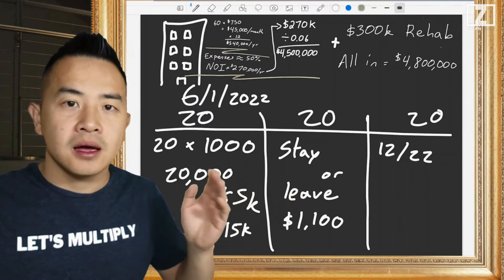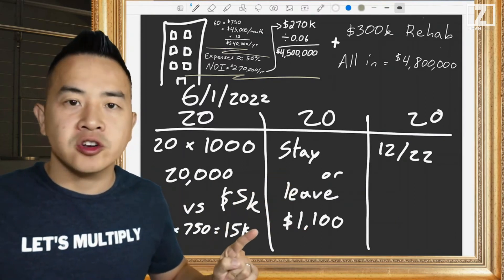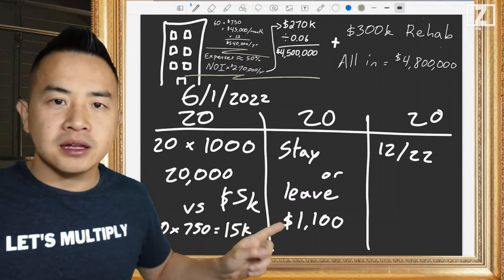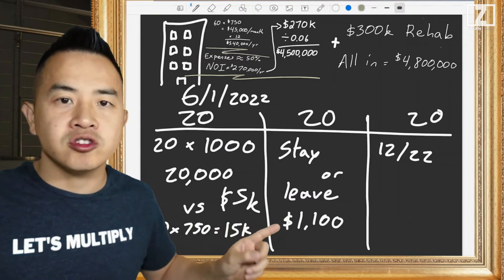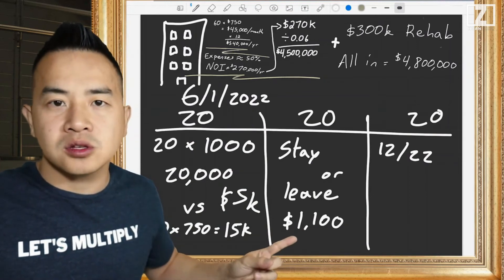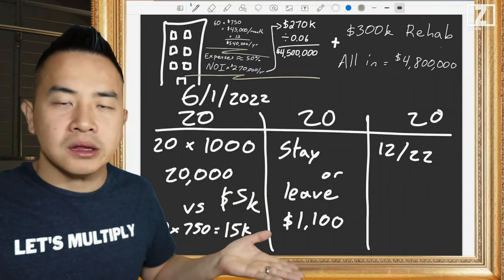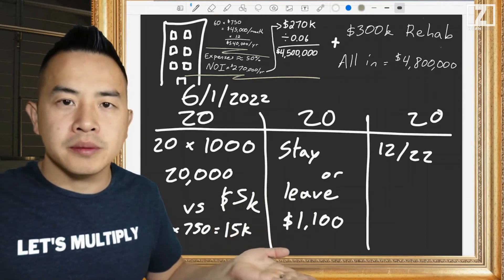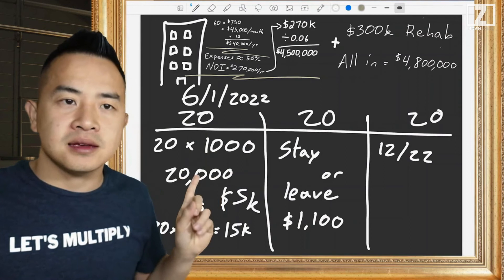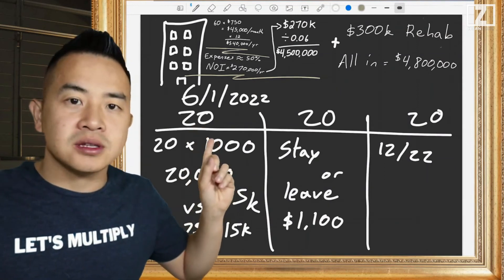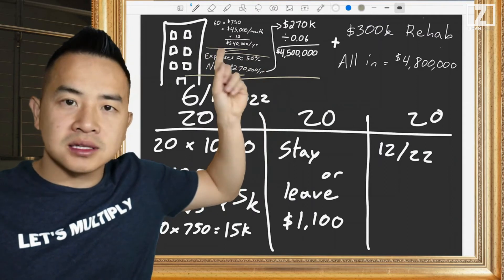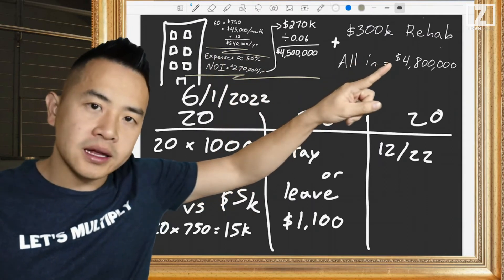Now on to the next 20 units. We have the same conversation: do you want to stay or leave? But if you stay, the rent is going to be $1,100. While renovating the first group, we realized the market shifted — all competing apartment buildings are renting for $1,200. We can definitely do $1,100. So these 20 tenants decide whether to stay or leave; new tenants will pay $1,100. We're still staying below market. Either way, we're renovating all units.